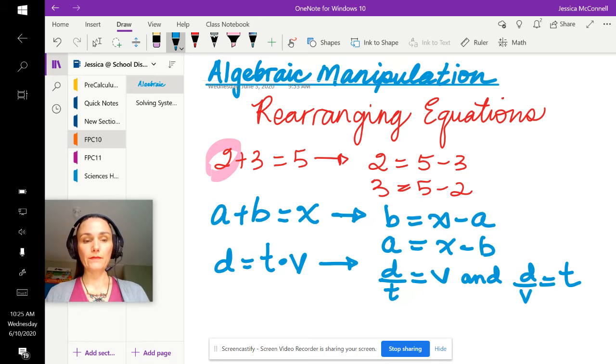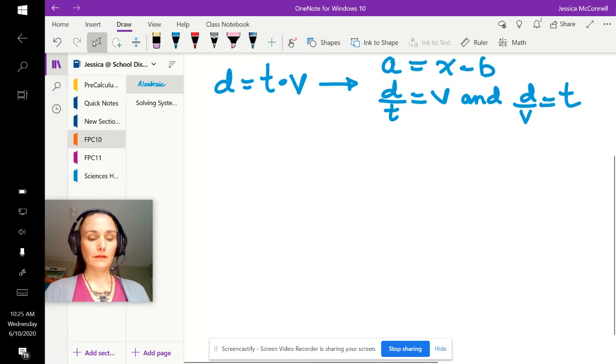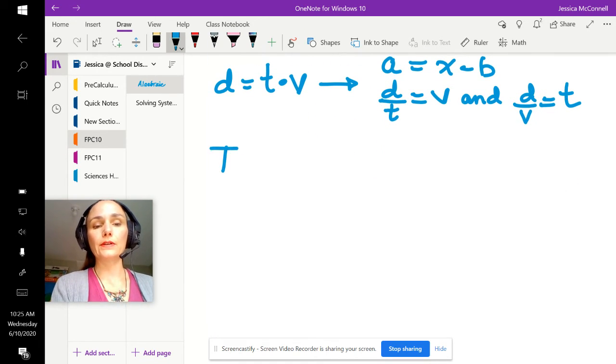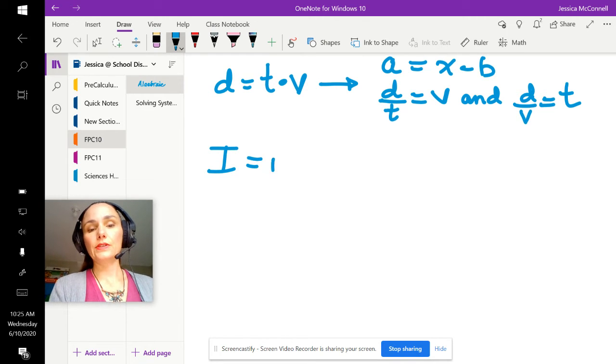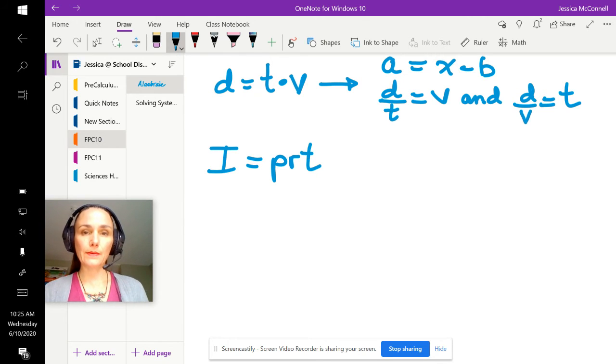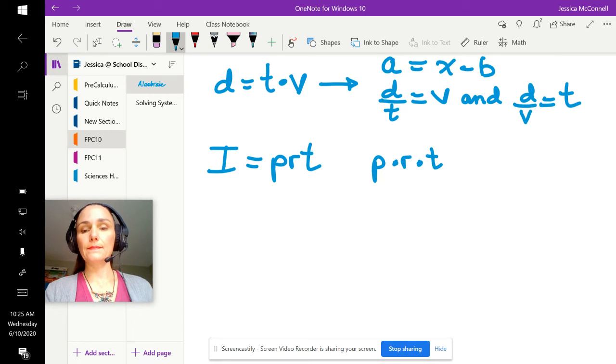Here's another really common one. This is for calculating interest in simple interest equations or problems, so we've got I for interest, principle, rate, and time. But all of these - the p, the r, and the t - are joined together with a multiplication. So this is actually p times r times t, and because that relationship is multiplicative...